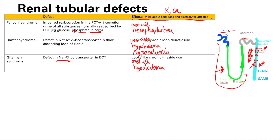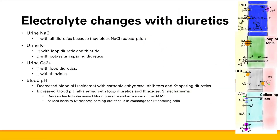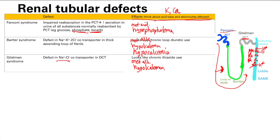How is calcium going to change in Gitelman syndrome? Remember, when thiazide is blocked here, there's decreased sodium intracellularly, so there's going to be increased sodium reabsorption via the concentration gradient. So now we get increased reabsorption of calcium — you get hypercalcemia. You can see Bartter and Gitelman syndromes look pretty similar, but the main difference is that Bartter syndrome gets hypocalcemia while Gitelman syndrome gets hypercalcemia.